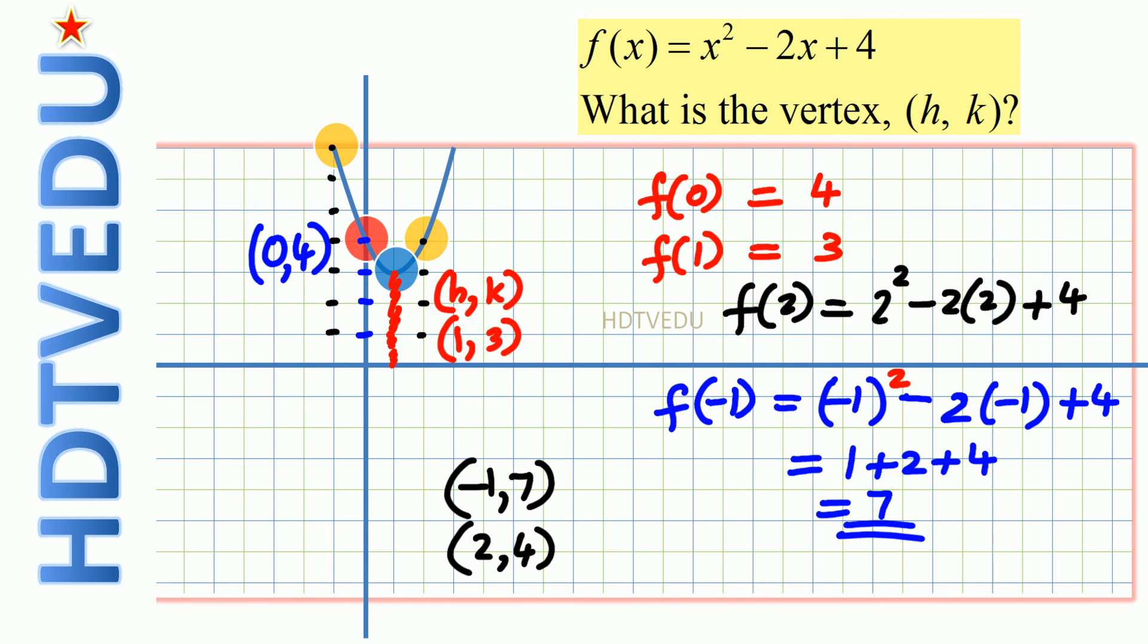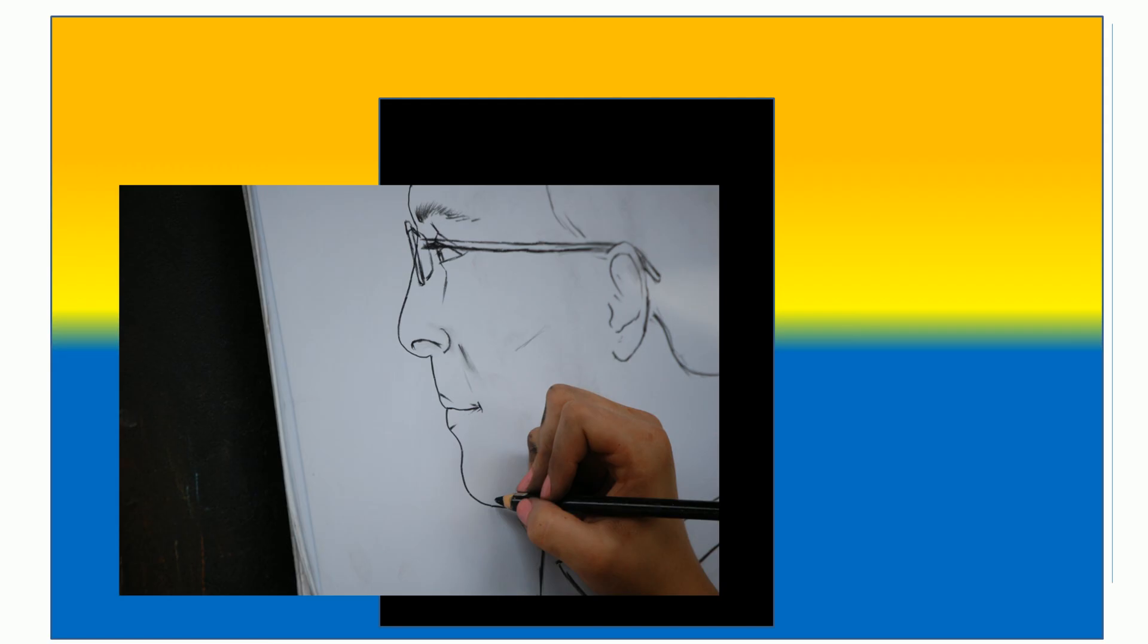Join all that and we get the curve. Do not forget, whenever there is x to the power of 2, it is always going to be a curve. And this is George Matthew signing off. Good luck.